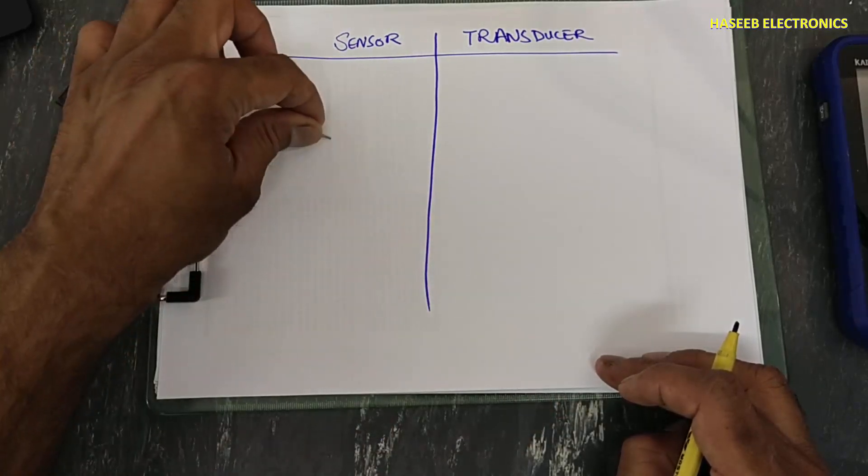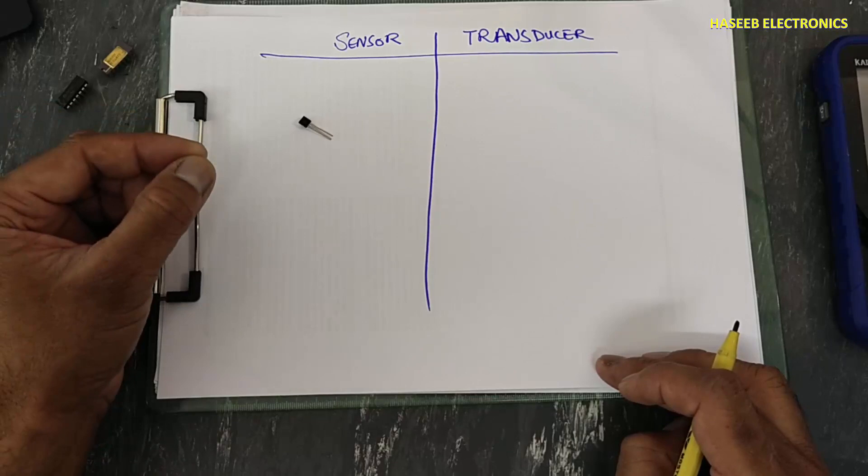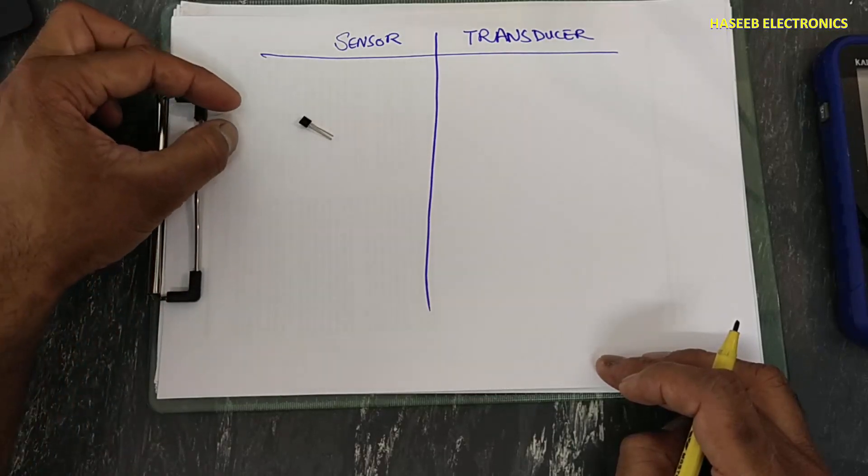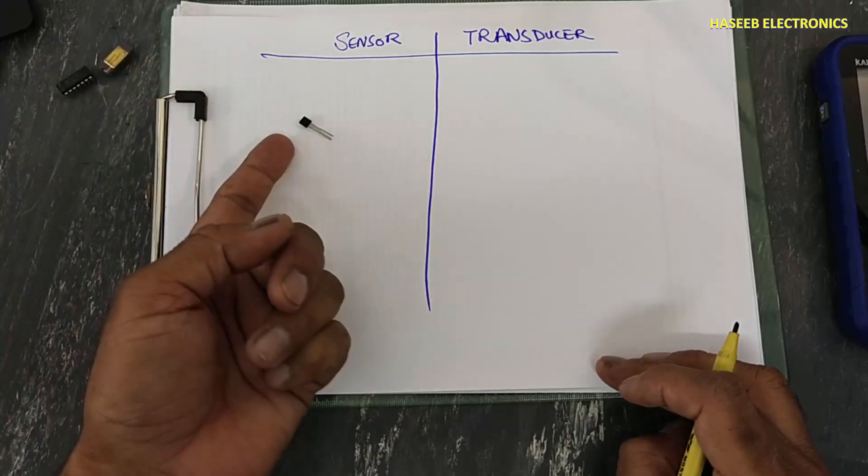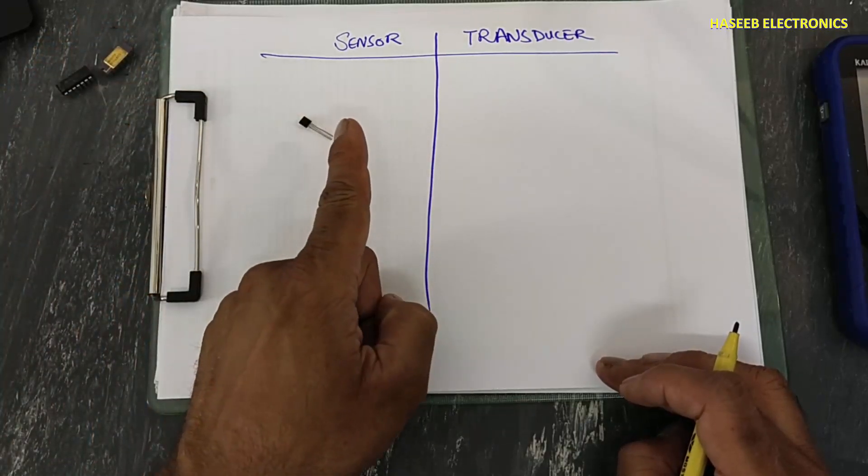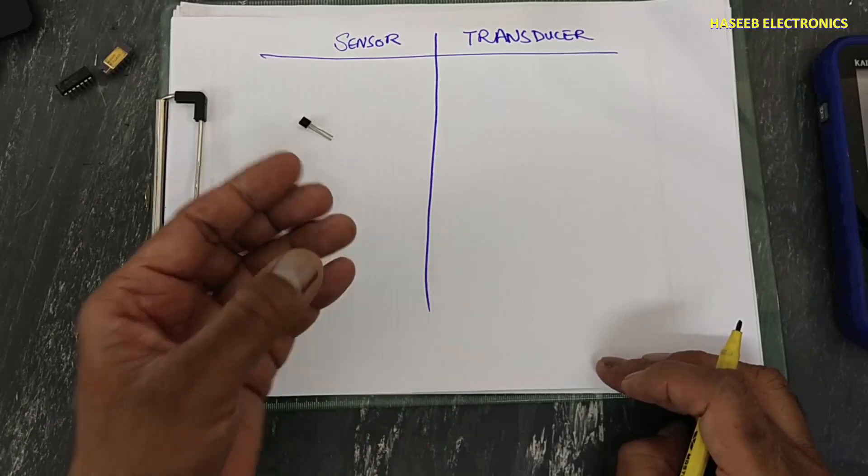Sensor: any component, any device which receives one type of energy and converts into relative electrical signal, that is sensor.